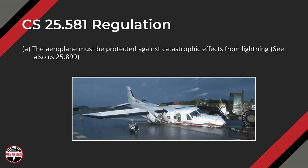There are really three things to remember with the regulations, broken up in three parts. The first part of CS25.581 is Part A, which states the airplane must be protected against catastrophic effects from lightning. Also see CS25.899, which is a bonding requirement. So the first criteria is you must stop catastrophic effects.